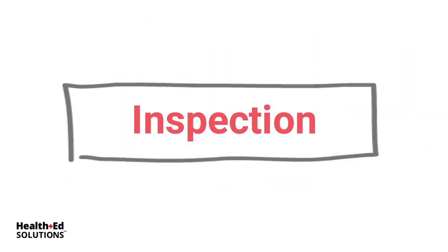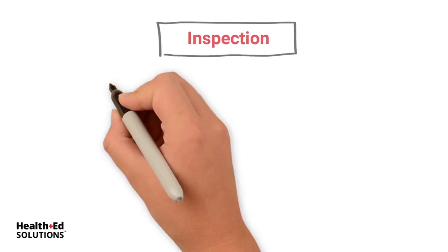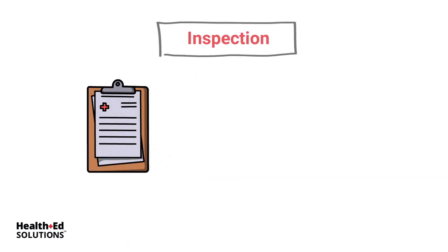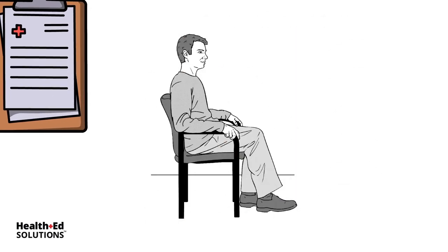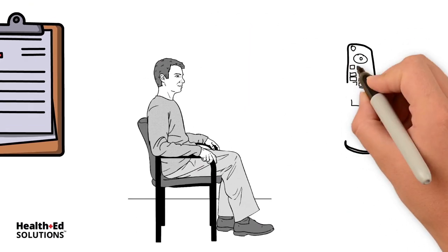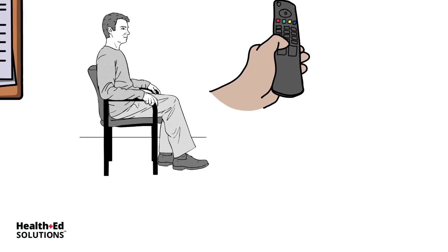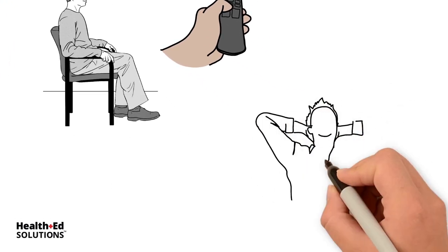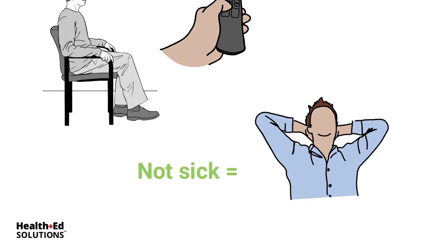You can gather so much data about your patient the minute that you walk into your patient's room. You can tell if they're sitting up in the chair, sitting there with their clicker, watching TV. They don't have any oxygen on, they're not struggling to breathe. This patient can be very quickly labeled as not sick.